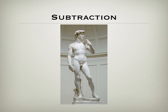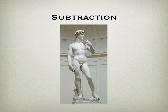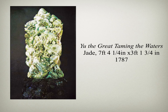Subtraction, or carved work, is the first method. What happens is we start with a larger substance and the artist removes the unwanted material — they subtract it from the original block. Here we have Michelangelo's David, 1501 to 1504, made of marble. Michelangelo claimed that the form was always in the block and he just released it by subtracting what shouldn't be there. You can also see subtraction in this work, Yu the Great Taming the Waters, made from jade. Again it's full round, though you can make arguments that part of it is relief. What was not wanted is removed.